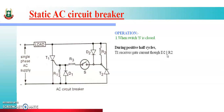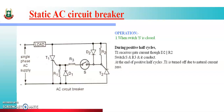Gate current for T1 flows through the parallel combination of D2 and R2, then through the closed switch S, then through R3, and finally to the gate of T1. So T1 receives its gate signal through the D2-R2 parallel combination. As soon as the gate signal is received, SCR T1 turns ON. With T1 ON, the positive terminal connects through T1 to the load, and current begins flowing to the load.